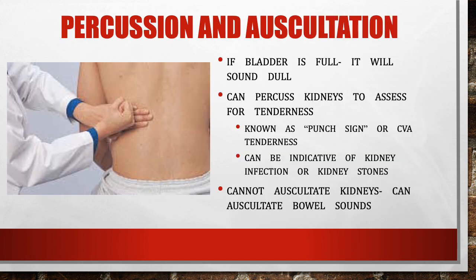We can also percuss and auscultate. A full bladder will sound dull upon percussion. We can percuss the kidneys to assess for CVA tenderness, or the punch sign — you place your hand on the retroperitoneal area and strike your fist into your hand. If this causes tenderness, it can be a sign of kidney infection or kidney stones. We can also auscultate bowel sounds, which can reflect problems with the kidneys or abdomen in general.